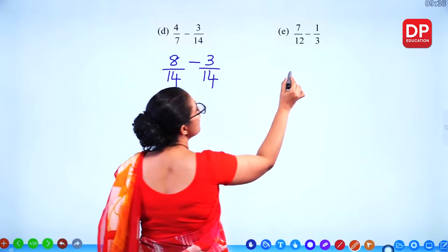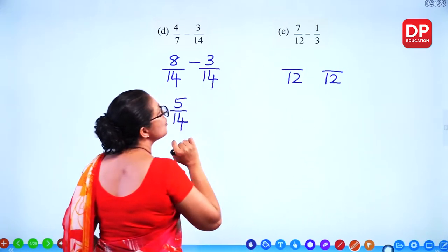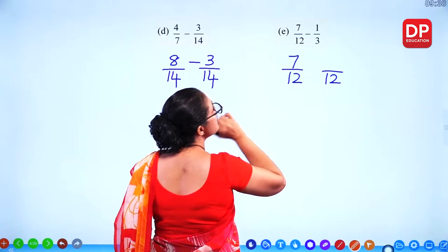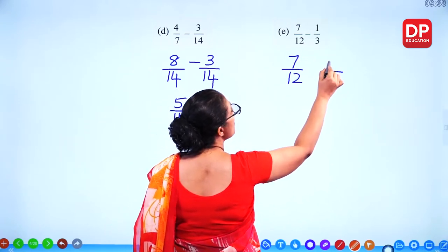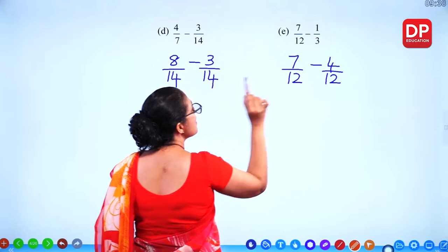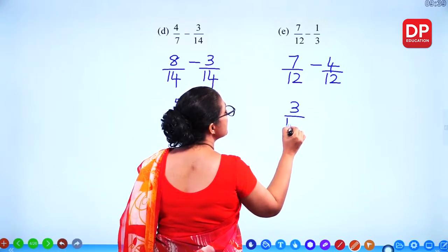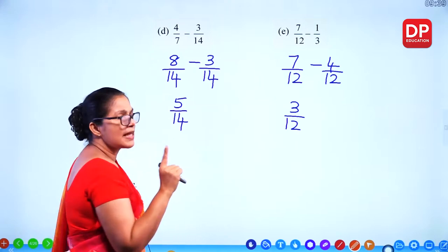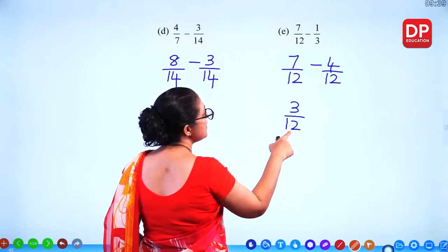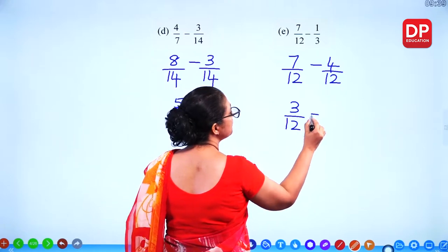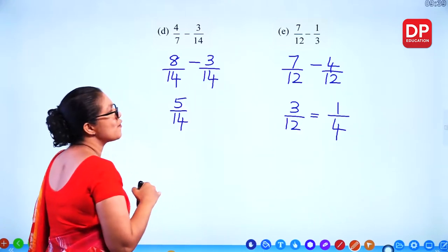For subtraction with denominators 12 and 3, the common denominator is 12. Write 7/12 as it is. Convert the fraction with denominator 3: 4 times 3 = 12, and 4 times 1 = 4. Subtract: 7 minus 4 = 3, giving 3/12. We can simplify by dividing both by 3 to get 1/4.